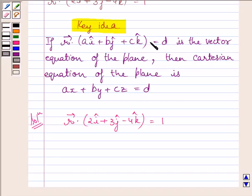Comparing these two equations, we get value of A is equal to 2, value of B is equal to 3, value of C is equal to minus 4, and value of D is equal to 1.